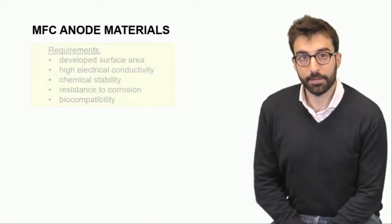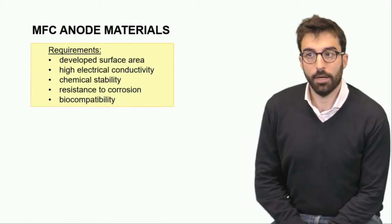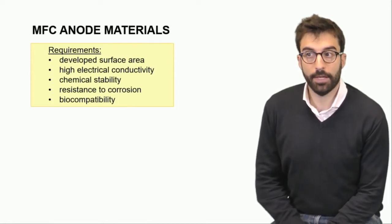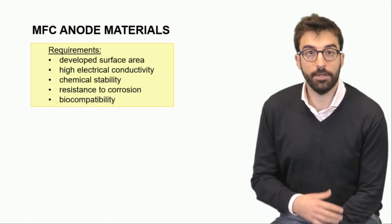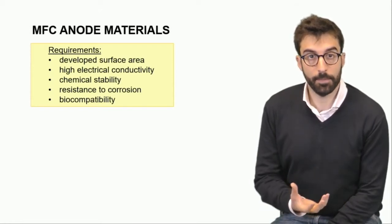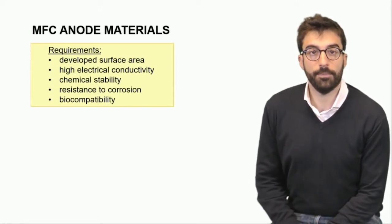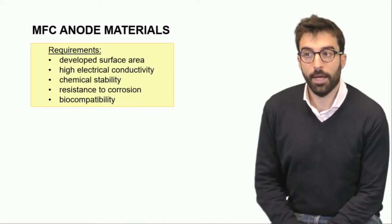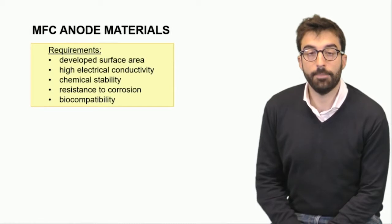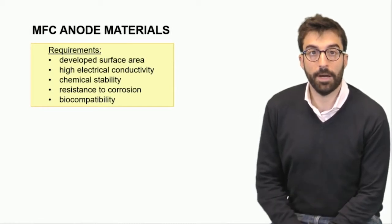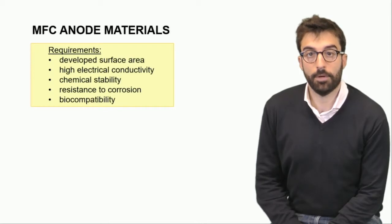Starting from anode materials that have as a requirement a developed surface area, they have to be highly electrically conductive, have chemical stability due to the peculiarity of the anodic chamber, and of course they have to have good resistance to corrosion and biocompatibility to the bacteria that are present in the anode chamber.